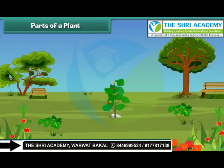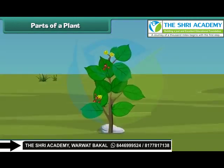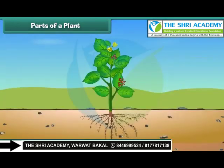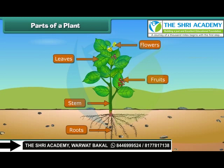Friends, let us discuss the various parts of a plant. The main parts of a plant are roots, stem, leaves, flowers and fruits. Let us know them one by one in more detail.